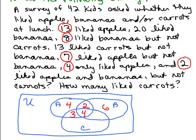Still can't use the 42 kids — three more pieces to fill in, but getting closer. Twenty liked bananas: so far I have 6, 2, and 4 in the banana circle, with one piece left. 6 plus 4 plus 2 is 12, so what's left for that last piece to make the total 20? Eight. I've used that piece of information.